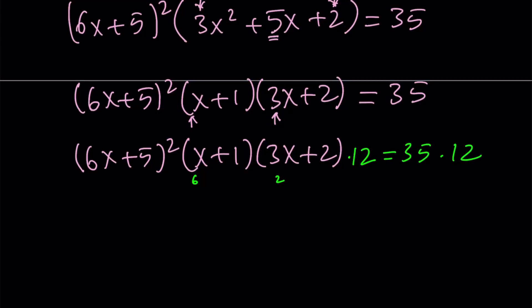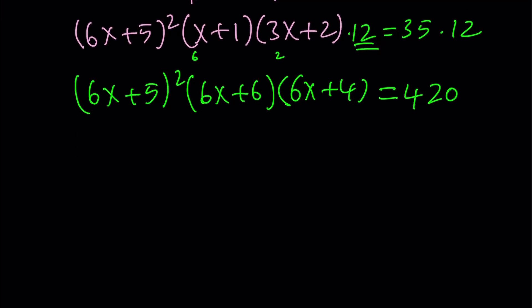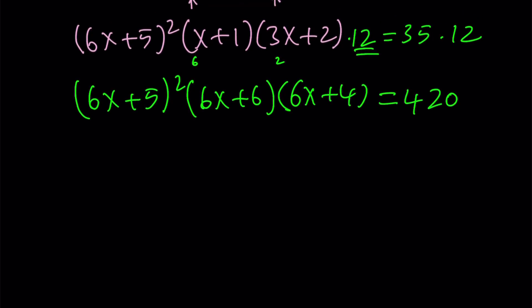Now, let's see how we can proceed. I'm going to multiply. Obviously, 6 times 2 is 12. So I can multiply x plus 1 by 6 to get 6x plus 6. And I can multiply 3x plus 2 by 2 to get 6x plus 4. That is equivalent to multiplying by 12. And on the right-hand side, 35 times 12 is the same as 70 times 6, which is 420. Now, notice that coefficient of x is 6 everywhere. And not only that, but also these terms are consecutive.